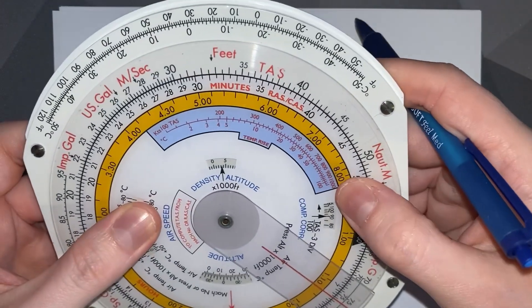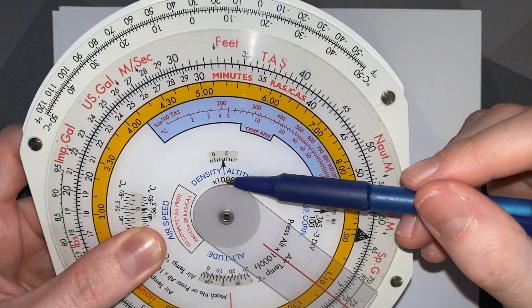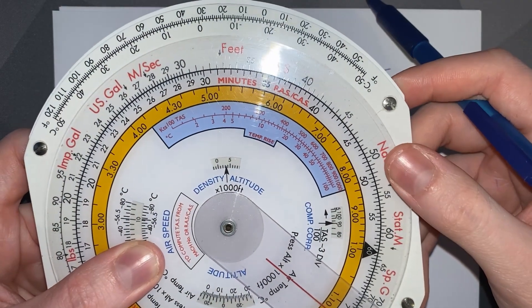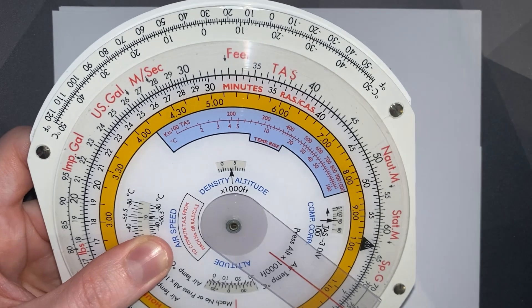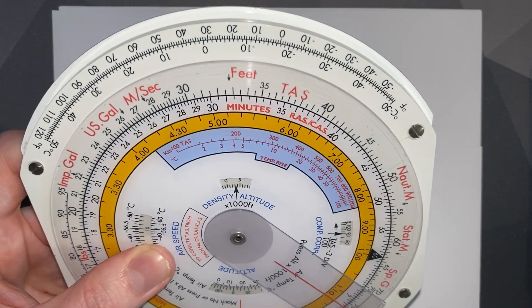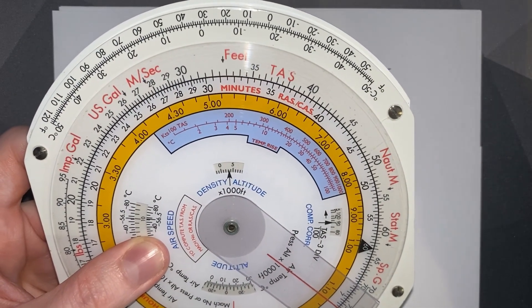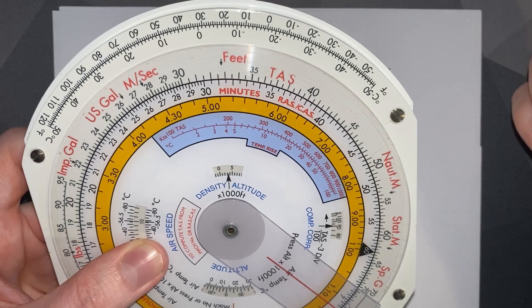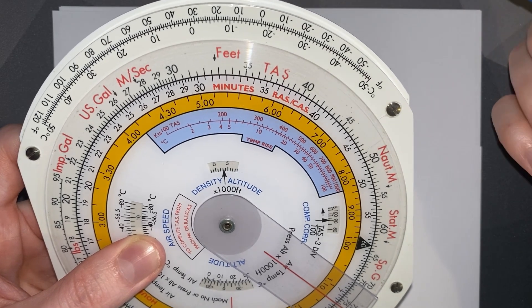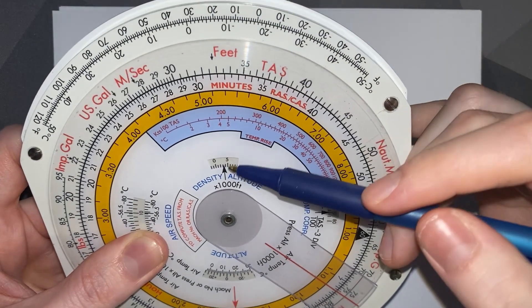Now we flip our CRP5 over and go to our density altitude window, where we'll read off what the arrow is pointing at. It is sometimes difficult to read as the scale is extremely small, so it's hard to get accurate answers. But for exam purposes, it's usually close enough to select the correct answer.